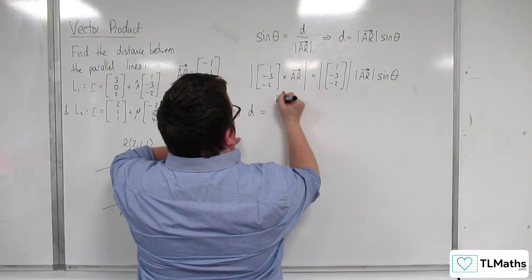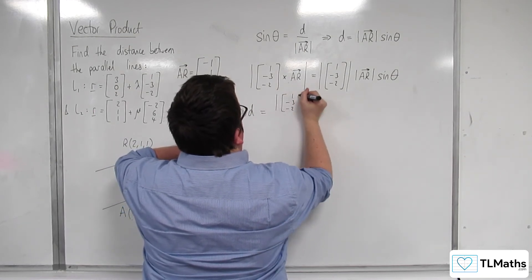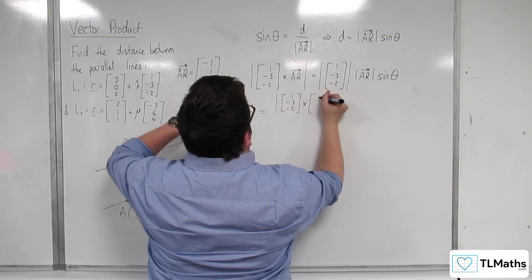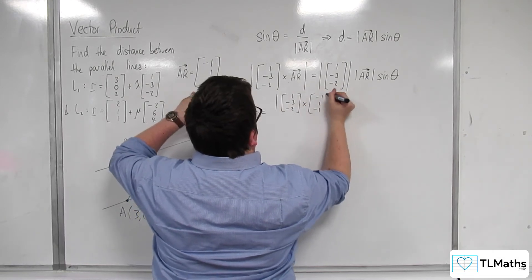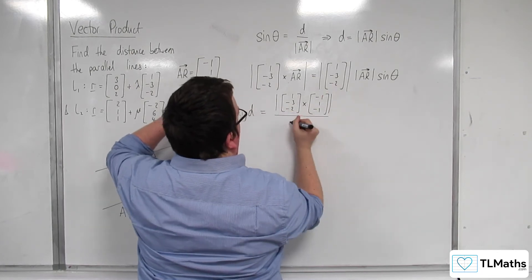So we've got the length of the vector product of 1, minus 3, minus 2, and minus 1, 1, minus 1, divided by the length of this vector here.